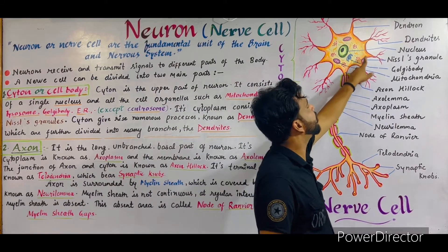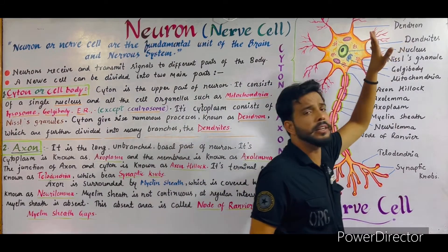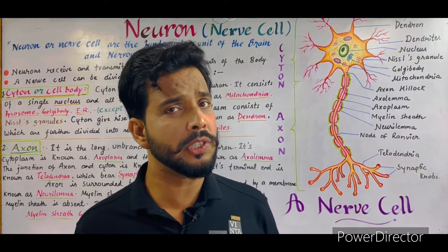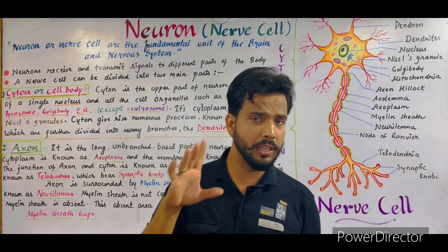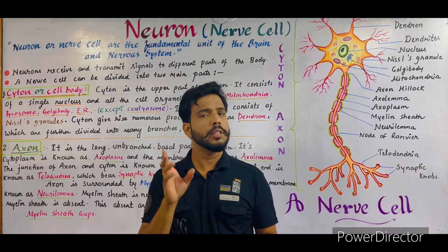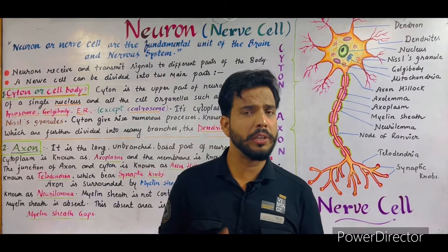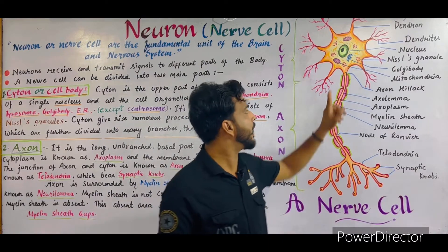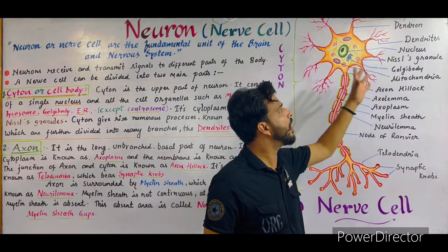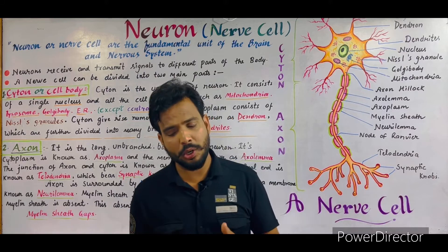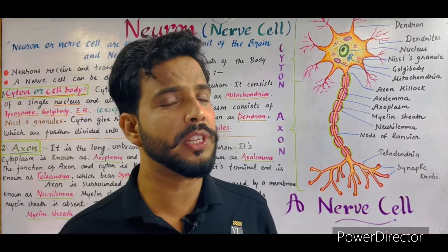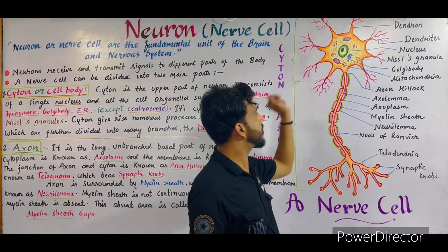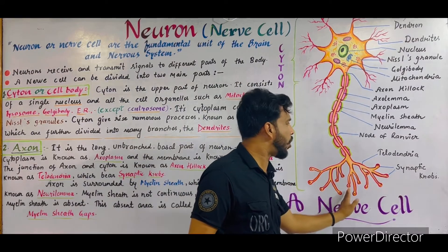From the outer margins of the cytone, some processes arise which are known as dendrons, as you can see in this diagram. These dendrons are further divided into numerous branches which are known as dendrites. So a cytone consists of a single nucleus, different kinds of cell organelles except the centrosome, and a few processes known as dendrons, which are further divided into many branches known as dendrites.